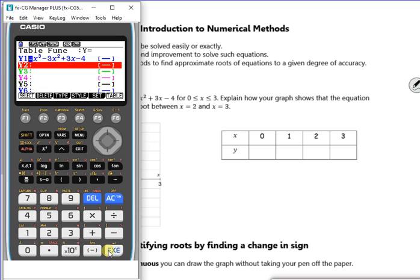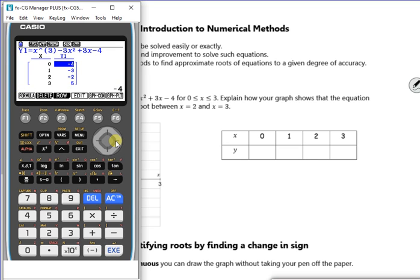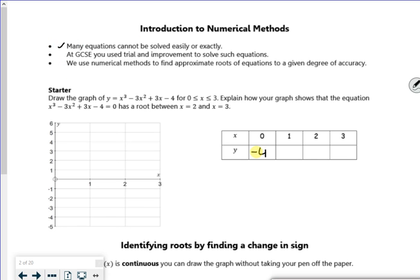And then just press execute again, and it'll give me the values. So I'll draw minus 4, minus 3, minus 2, and 5. So then it says, draw the graph.